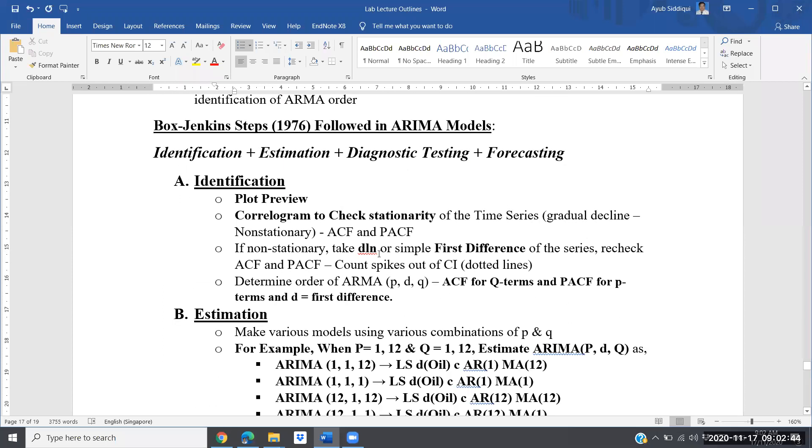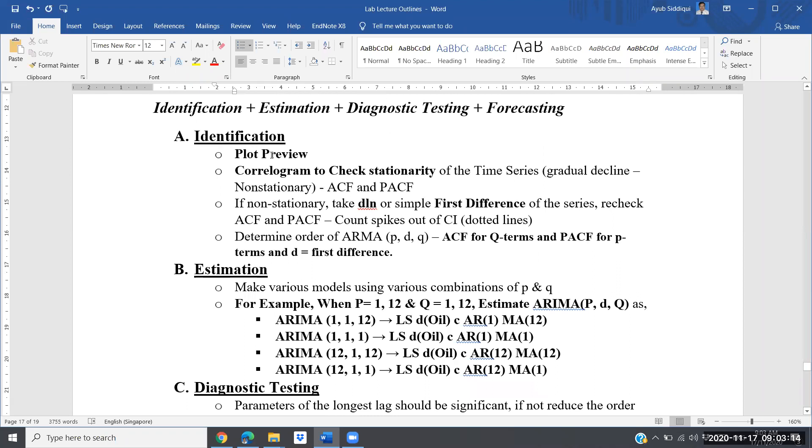Now Box and Jenkins, these two financial analysts or economists, they have actually designed, they have listed certain steps. I have summed up these steps into four categories. First category is identification, second is estimation, diagnostic testing three, and then in the end, forecasting. Starting with identification, I have organized yesterday's discussion because we will be following these methods. They should be well organized before you practically start estimating ARMA and ARIMA.